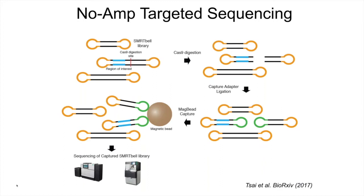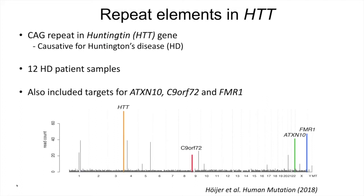We tried this approach for studying repeat elements in the HTT gene, which is causative for Huntington's disease. It contains a CAG repeat that can be expanded, and if you have too many of these repeat expansions you will develop this disease. We looked at the HTT gene in 12 Huntington disease patient samples. A nice thing with this assay is that we can multiplex — studying several guide RNAs in the same run. In addition to HTT, we included ATXN10 and FMR1, which are also causative of different diseases. So we can create a panel of these types of guide RNAs.